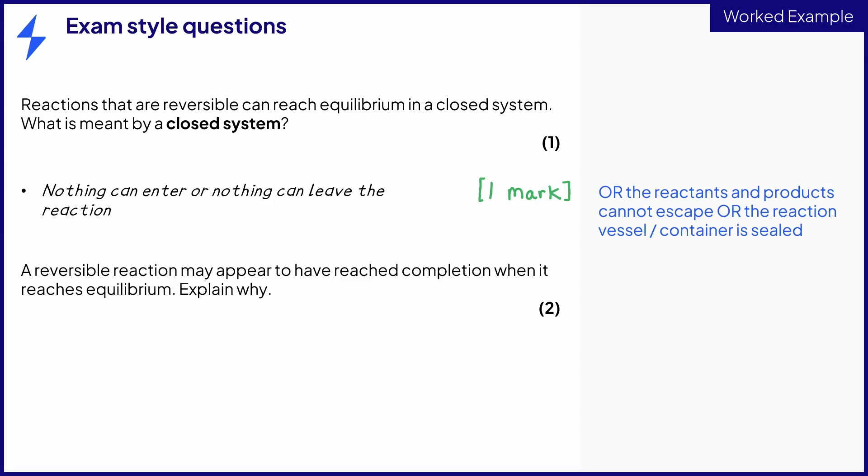This next question asks you to explain why a reversible reaction may look as if it has gone to completion. This will occur because there is no overall change in the quantities present, even though the reactants are continuously forming the products and the products are continuously forming the reactants. You need to explain why this happens.